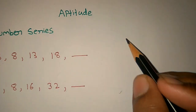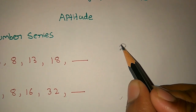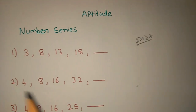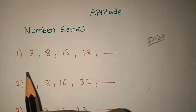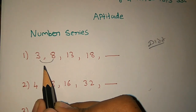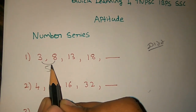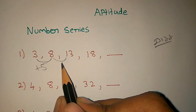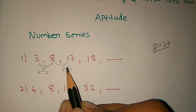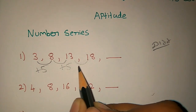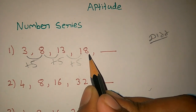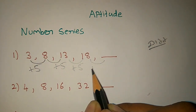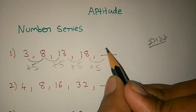First, we find the difference. If you look at the difference, the difference is plus 5. Here the difference is plus 5, and here also plus 5. So the difference increases by plus 5 consistently.